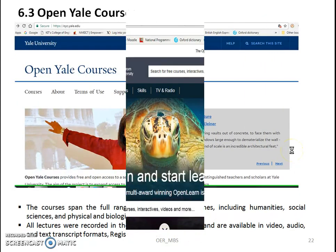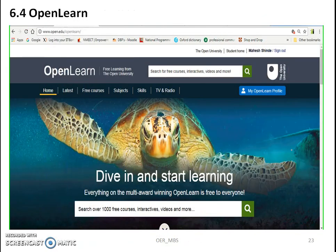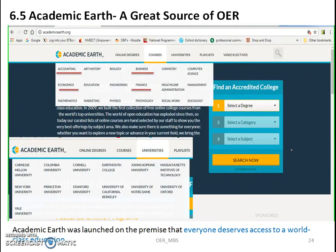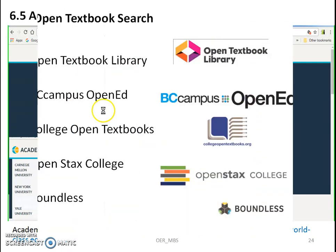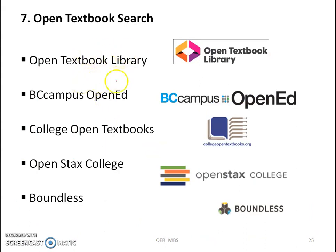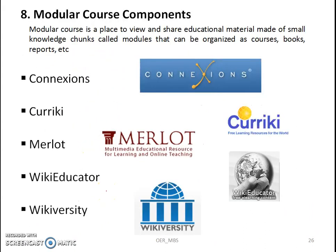OpenL Courses is another example. OpenLearn is also a great source of OERs. Academic Earth is one of the greatest sources of OER, where you will get all kinds of material from all domains. For textbooks, there are listed resources. For modular courses, there are different components and modules which we can collect and combine to create our own course.